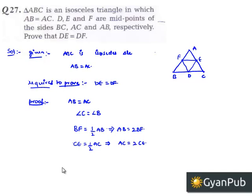Since AB equals AC, we have 2 times BF equals 2 times CE, which further implies that BF equals CE.